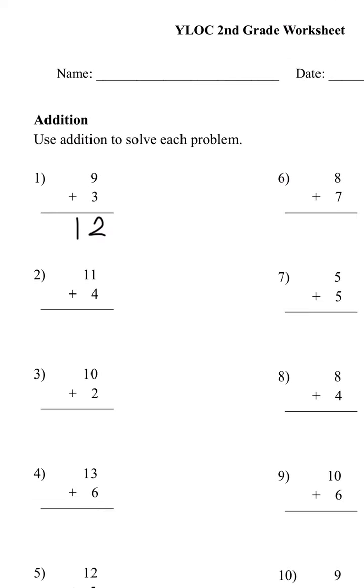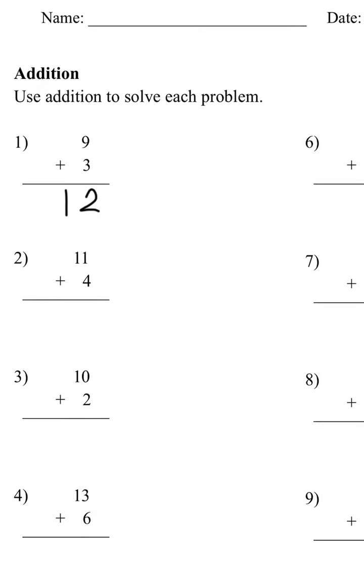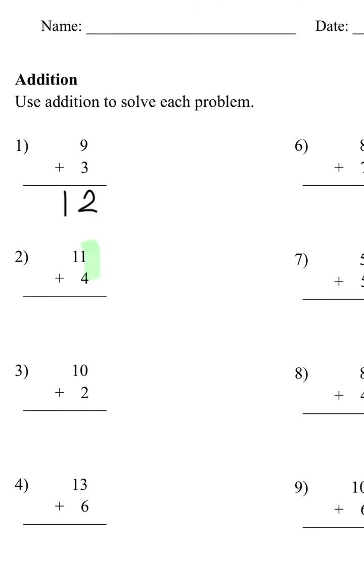Now number 2, we have 11 plus 4. We always start with the 1's place. So 1 plus 4 is 5. And the 1 comes down because it doesn't have any numbers below it. So the answer is 15.